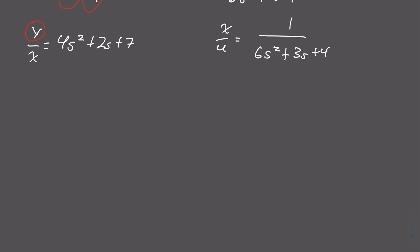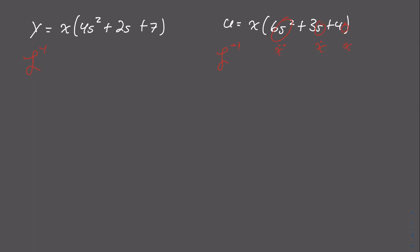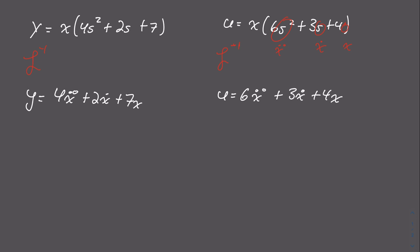For each of these, we solve for y and u. This gives us y equals x times (4s² + 2s + 7), and u equals x times (6s² + 3s + 4). Taking the inverse Laplace of both sides, we get y equals 4ẍ + 2ẋ + 7x, and u equals 6ẍ + 3ẋ + 4x.